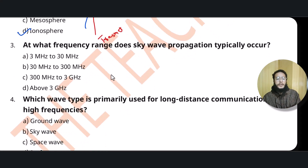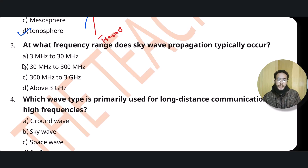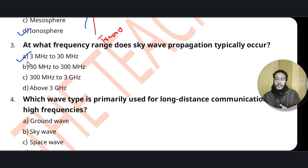The third question: at what frequency range does sky wave propagation typically occur? You should remember this fact — sky wave propagation operates in the 3 MHz to 30 MHz frequency range.